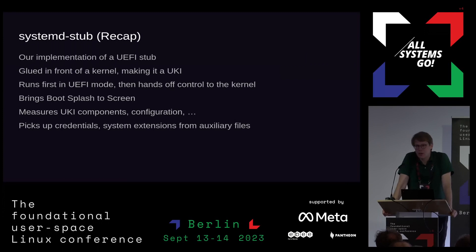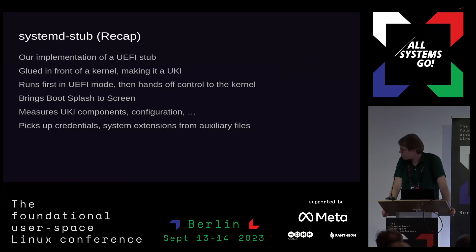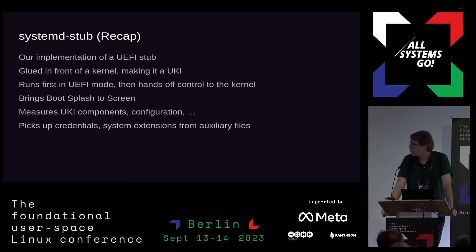It picks something up we call credentials. Credentials are a way how systemd can securely parameterize systems and services. They're basically little blobs of data — could be SSL certificates, configuration files, passwords, all these kinds of things — that you can encrypt and link to your TPM. You can put these credentials in the ESP, then systemd-stub will pick them up and give them to the initrd, which can then authenticate, decrypt, and use them. It's a way to securely parameterize a UKI without breaking the secure boot trust boundary, because these bits of information are always authenticated before they are used — signed or TPM-bound.